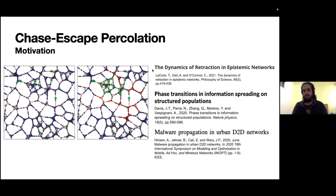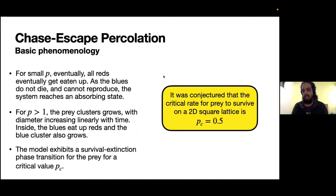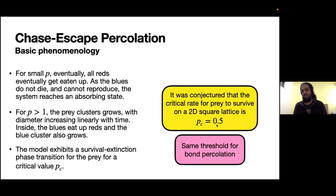On top of these applications, there was one very intriguing fact that motivated the study. It was conjectured very recently that the critical rate for prey to survive on a 2D square lattice was pc equals 0.5. As we know in percolation theory, 0.5 is a very sacred number - it is actually the exact bond percolation threshold on the 2D square lattice. So this conjecture suggested to us that there might be a relation between the Chase-Escape percolation and bond percolation on the square lattice.